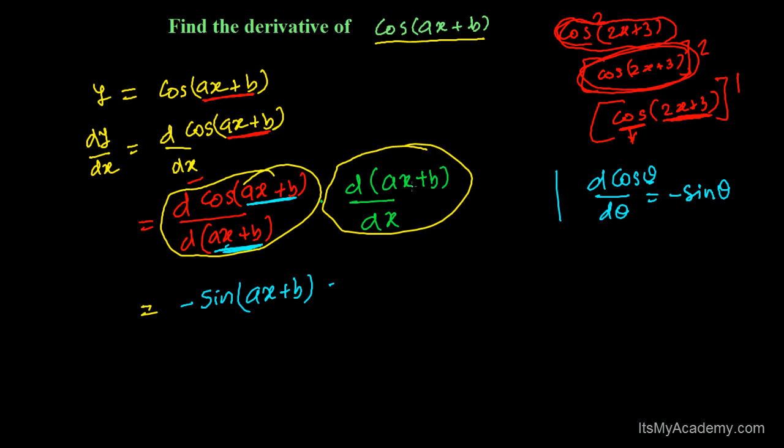And again, derivative of ax + b. A is the coefficient so it will come outside. The derivative of x is 1, and the derivative of B is 0 because it's a constant quantity.